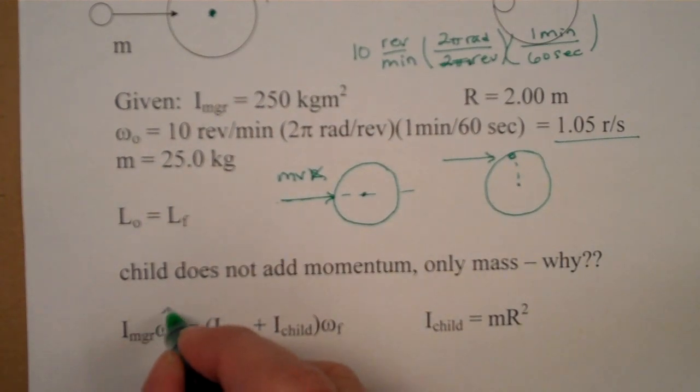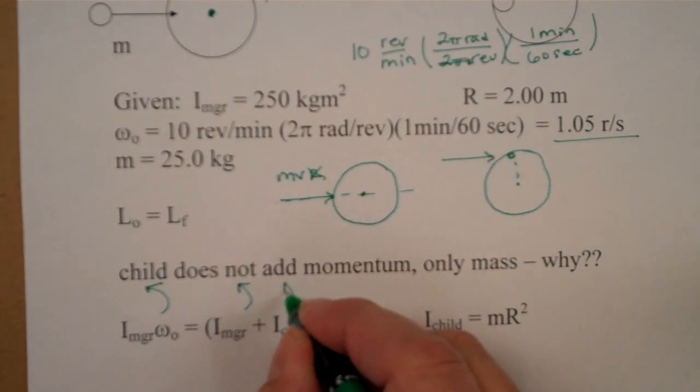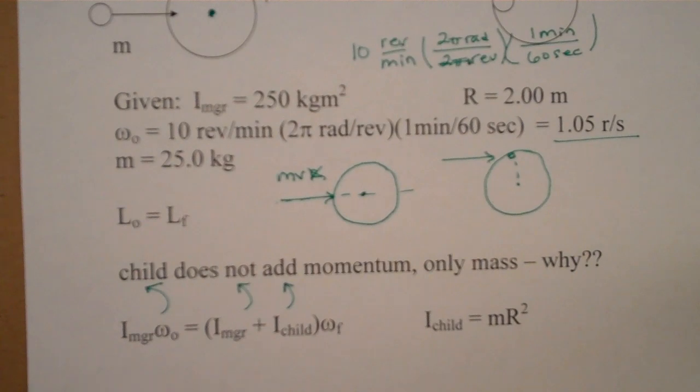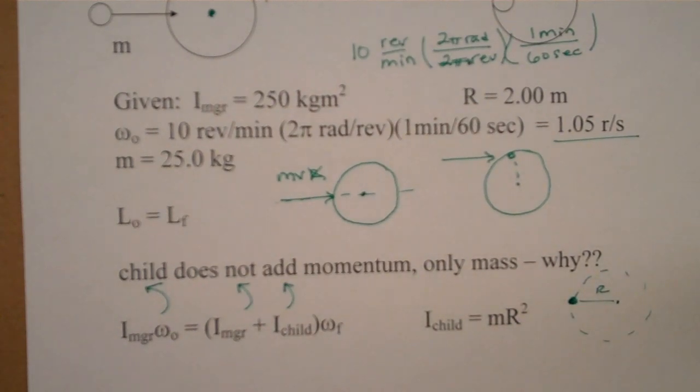And it's going to be rotating, in this case, clockwise. And then at the end, we have two things that are going to be rotating clockwise, the child and the merry-go-round together at some final speed. And of course, we're going to have to calculate the moment of inertia of the child by treating the child as a point mass that is a distance r away from the axis of rotation.